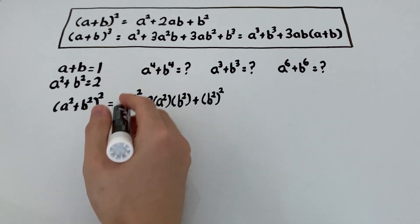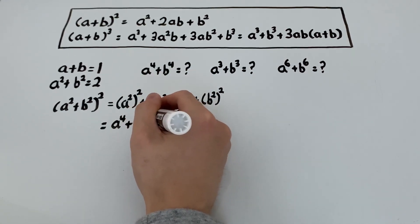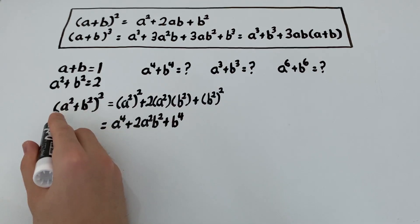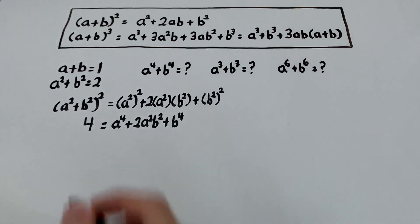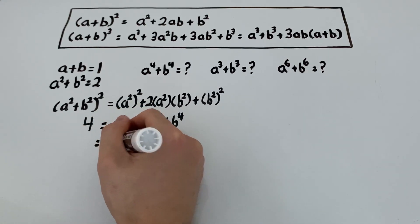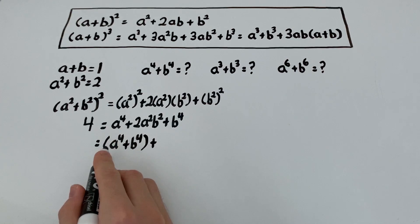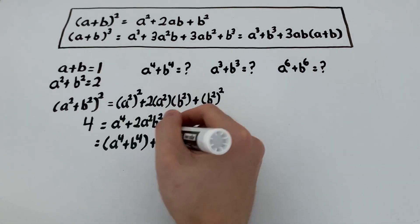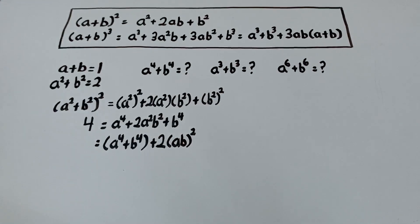Now, the right side is a to the 4th plus 2a squared b squared plus b to the 4th. And the left side is just the squared of 2, which is 4. And I'm just going to rearrange things a little bit. We're going to group a to the 4th plus b to the 4th together, because that's what we're trying to find. And 2 times a squared b squared is the same as 2 times the square of ab.